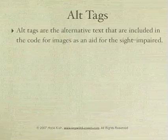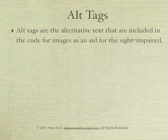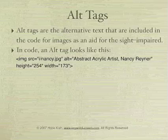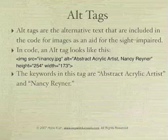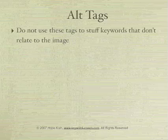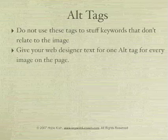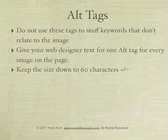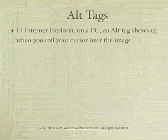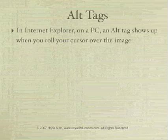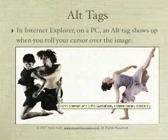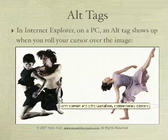Alt tags are the alternative text included in the code for images as an aid for the visually impaired. In code, an alt tag looks like this. The keywords in this tag are 'abstract acrylic artist' and 'Nancy Rainer.' Do not use these tags to stuff keywords that don't relate to the image. Give your web designer text for one alt tag for every image on the page. Keep the size down to 60 characters, plus or minus. In Internet Explorer on a PC, an alt tag shows up when you roll your cursor over the image. You've rolled your cursor over these dancers, and a flag comes up.